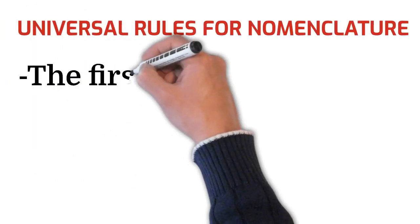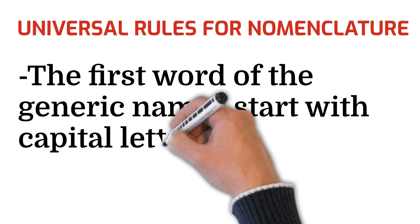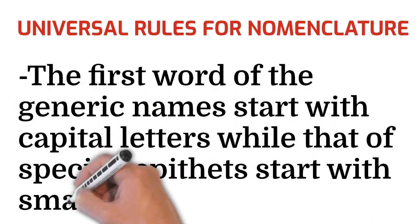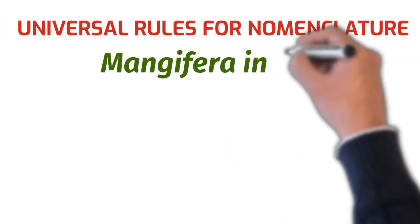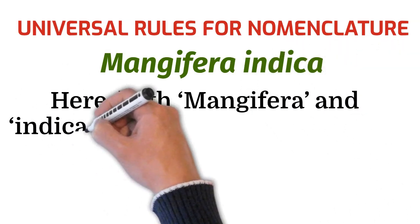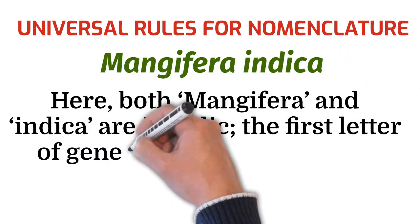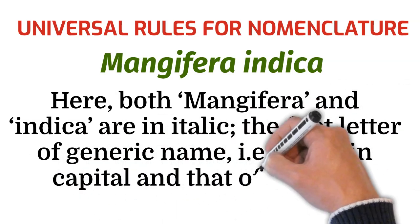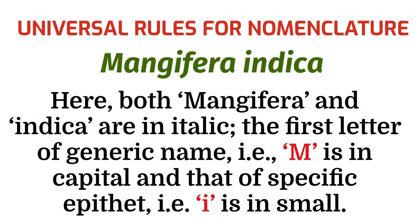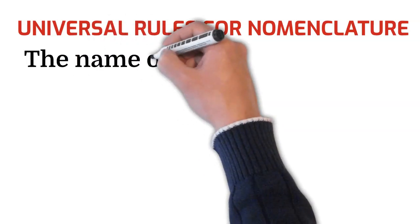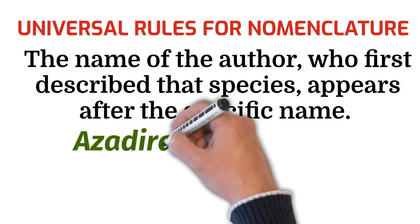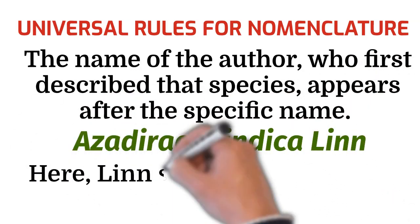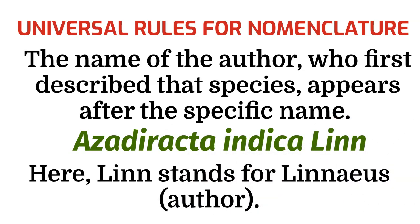The first word of the generic name starts with a capital letter, while that of the specific epithet starts with a small letter. For example, Mangifera indica — here both Mangifera and indica are in italic; the first letter of the generic name 'M' is in capital, and that of the specific epithet 'i' is in small letter. The name of the author who first described that species appears after the specific name. For example, Azadirachta indica Lin. — here 'Lin.' stands for Linnaeus, the author.